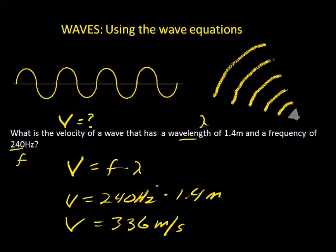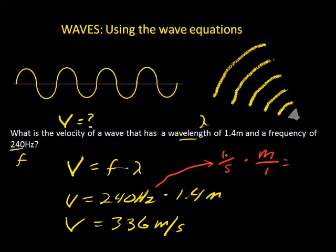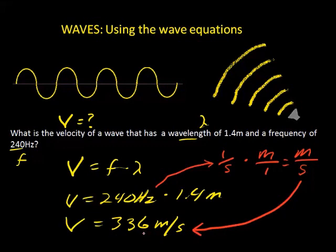You might ask: how do I get the unit meters per second? Hertz is really expressed as 1 over s — it's the inverse of the period. You can think of it as one wave per second, so 1/s. We're multiplying that by meters, which is meters over 1, so when you multiply it out you get meters per second. The answer is 336 meters per second, which is just about the velocity of sound, so this wave is probably a sound wave.